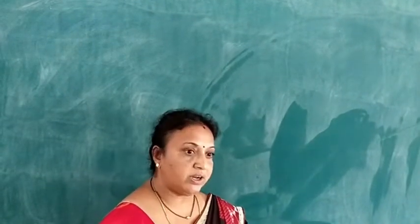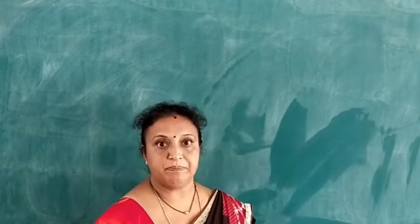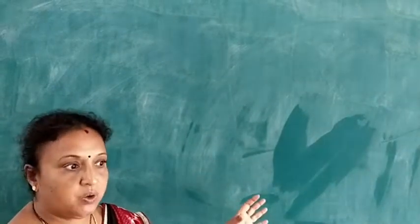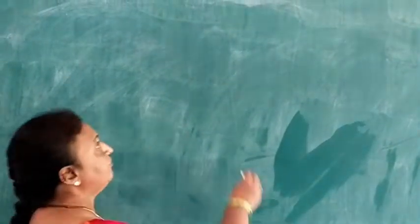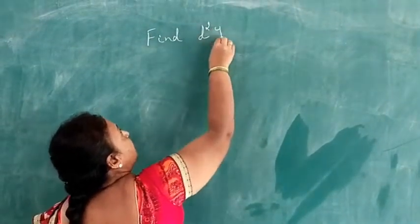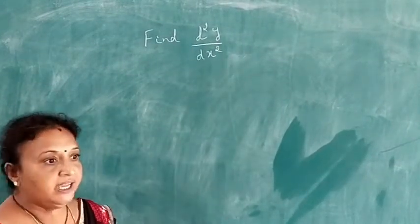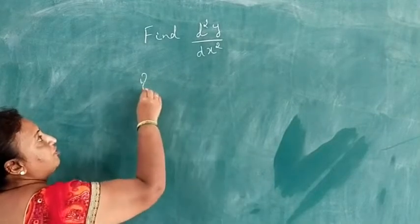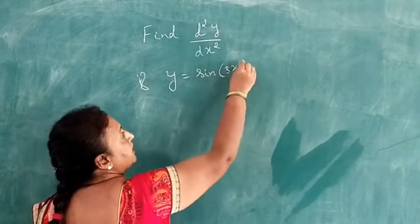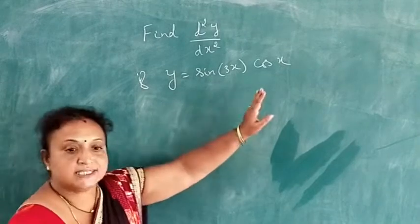Last class we discussed the second order derivative, and today we continue the same. First problem: find d squared y by dx squared, if y is equal to sin 3x into cos x.